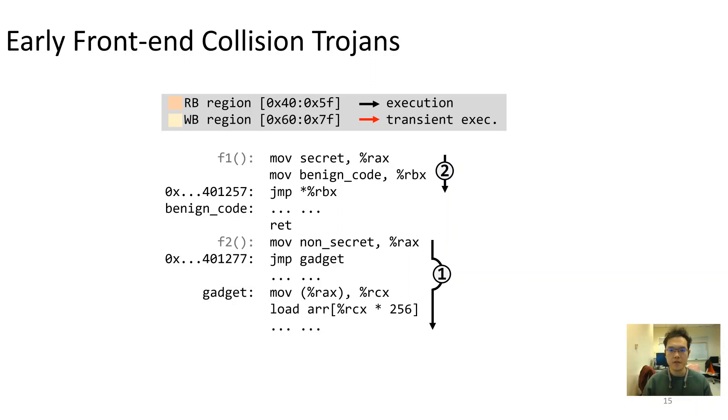Next, we execute function F1, which places a secret value into the same register. The followed indirect branch is supposed to jump to a benign code and return, so only F1 have access to the secret. However, due to the previous branch is in a writer branch region, and the current indirect branch is in a corresponding reader region, the current indirect branch will have misprediction resulting in transient execution jumping to the body of function F2, which contains the gadget that leaks the value stored in the same register. As a result, the gadget instruction will be executed in transient mode, with the register containing the secret value.